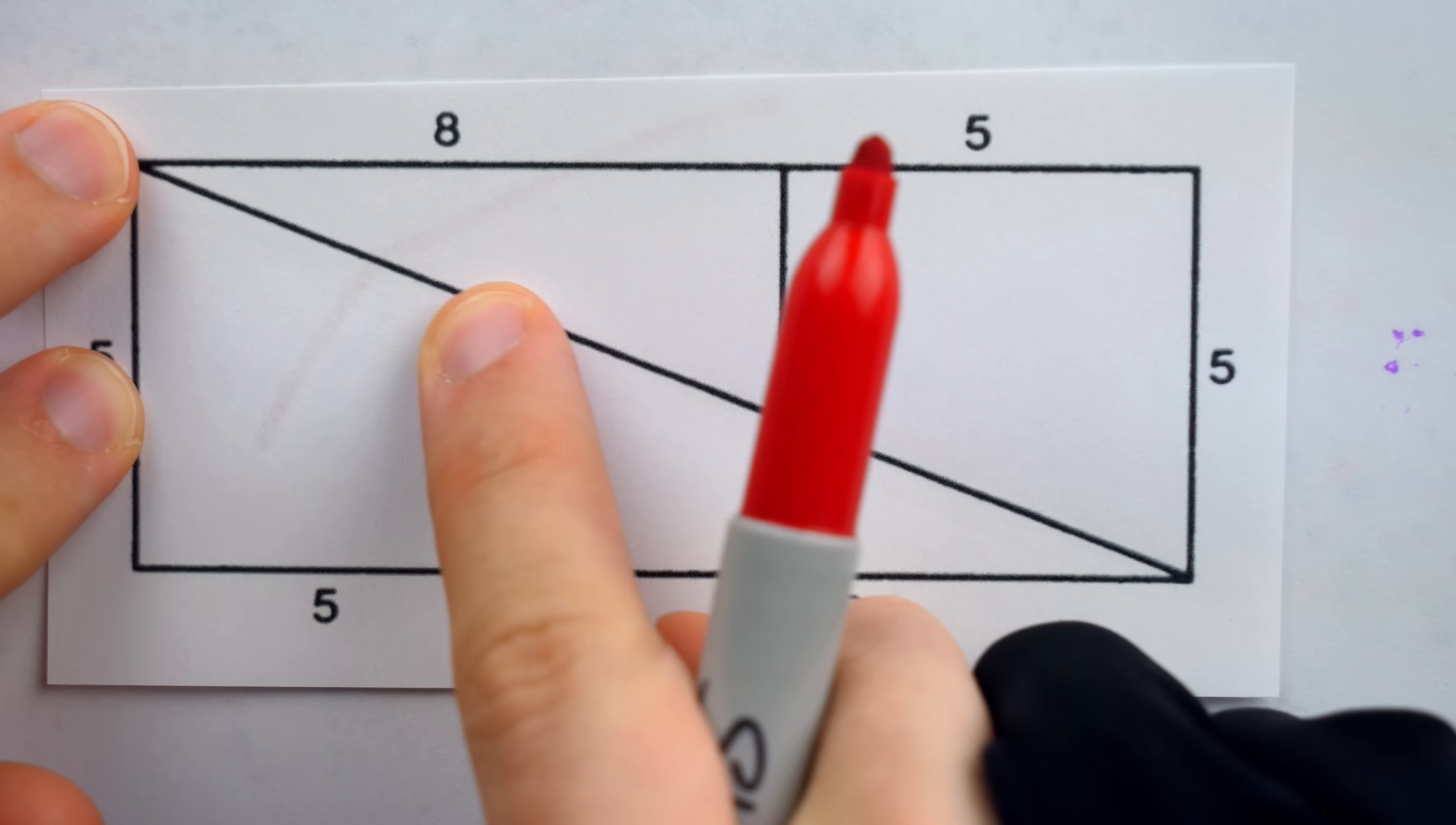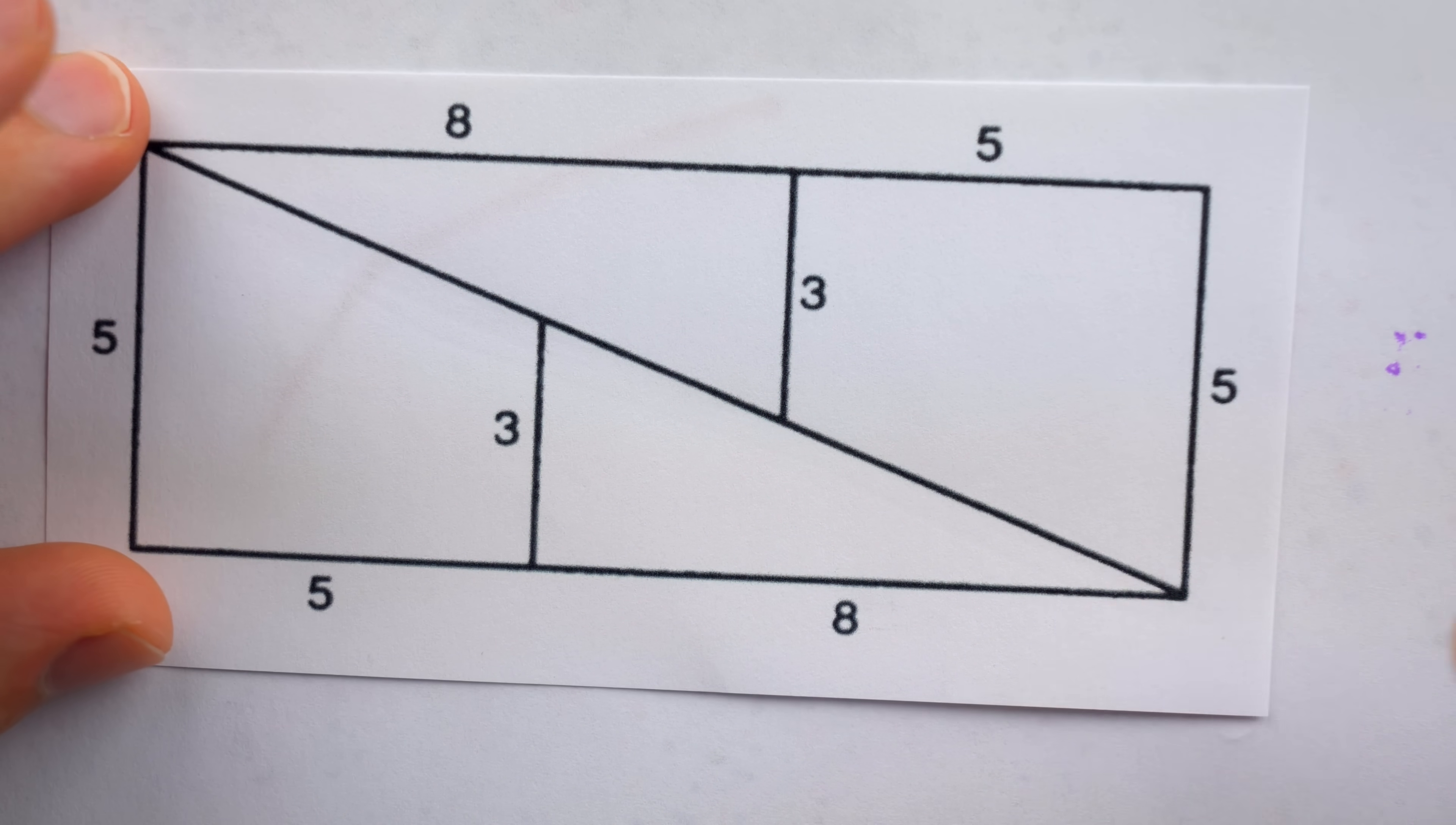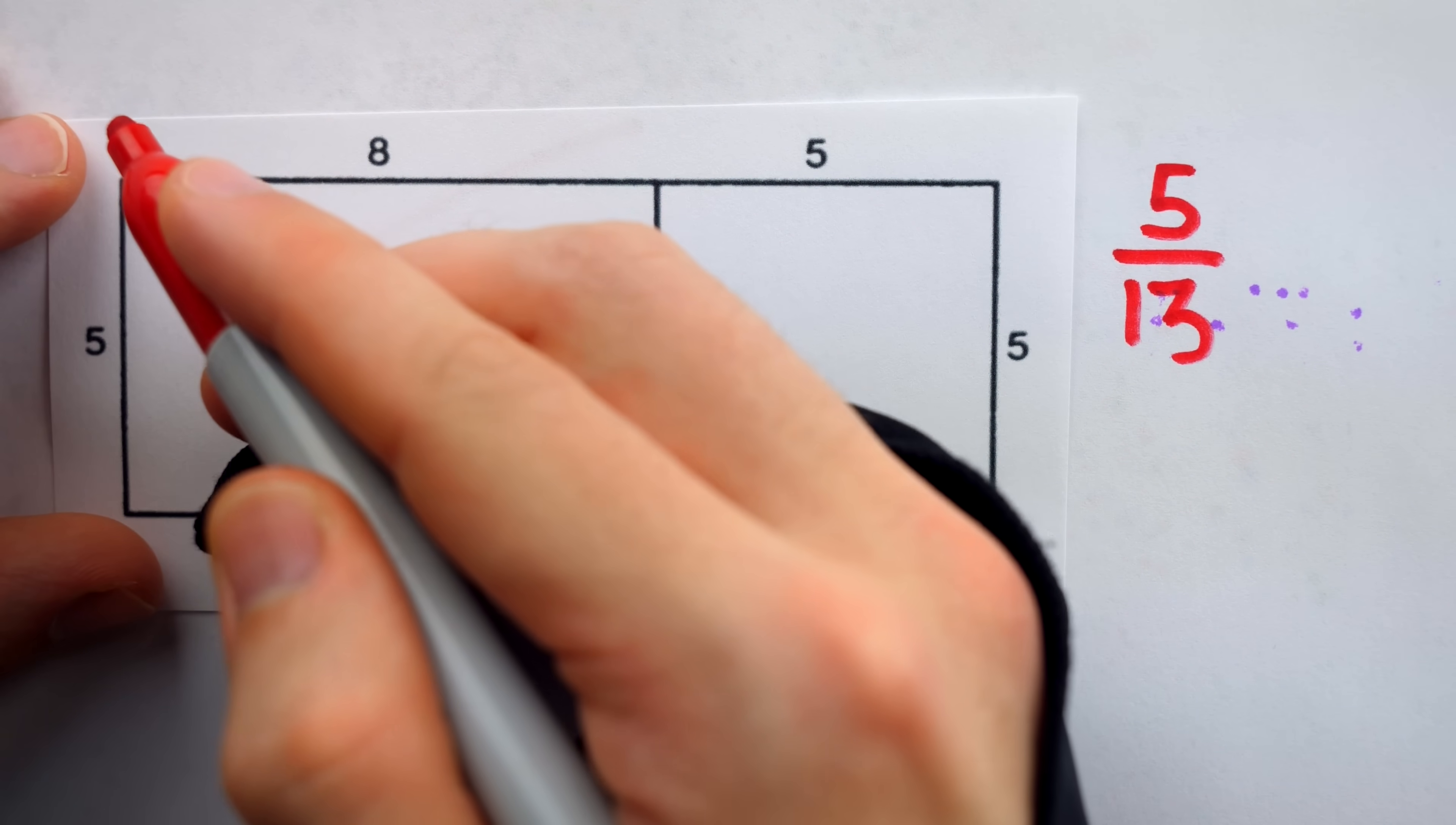Now, what is the slope of this whole line, if it's the diagonal of this rectangle? Well, the run is 5 plus 8, and the rise is 5. So rise over run would be 5 over 5 plus 8, or 5 over 13. That's the slope of the whole diagonal, and that should be the slope of any individual piece we look at.